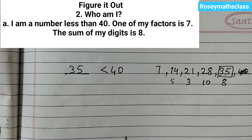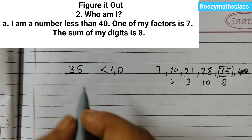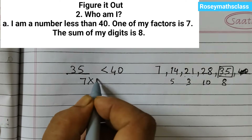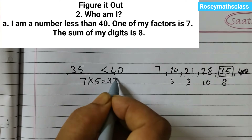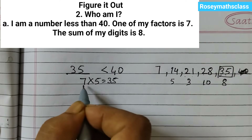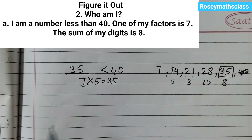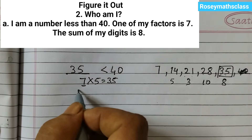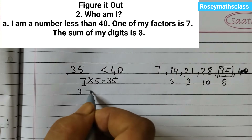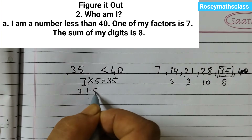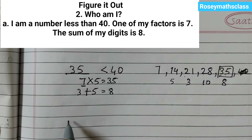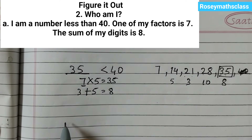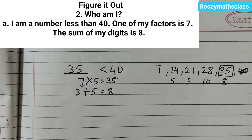The number is 35, because 35 is less than 40, one of the factors is 7 (7×5=35), and the sum of the digits 3+5=8. It satisfies all the conditions, therefore the answer is 35.